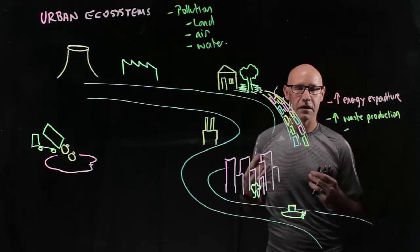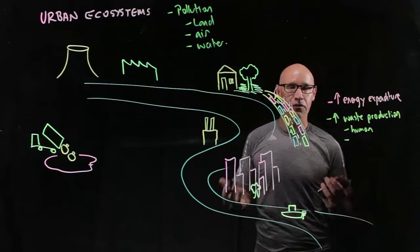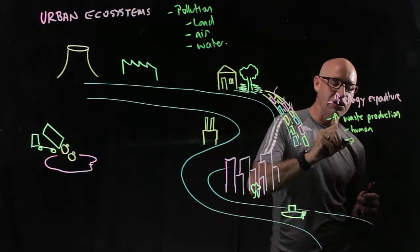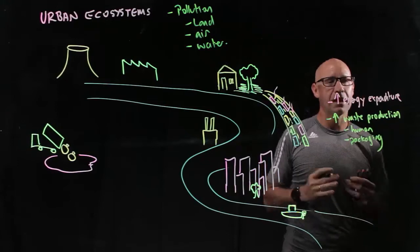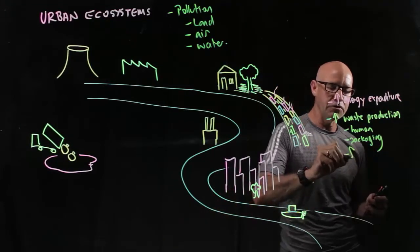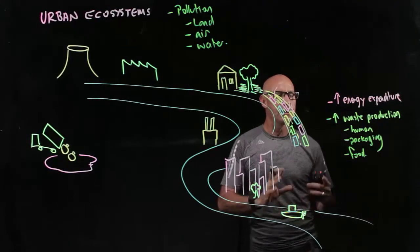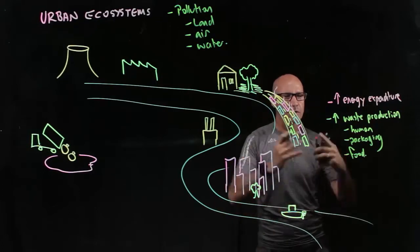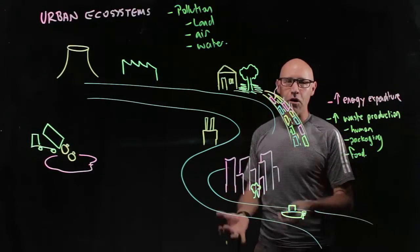Now that waste is human waste, so literally stuff down the toilet, packaging, so all of the stuff that we buy and take the packaging and discard it, and then of course, we've got a huge amount of food waste as well. So all of that's got to go somewhere. And this demand for energy and the production of waste has a negative impact on our urban ecosystems.